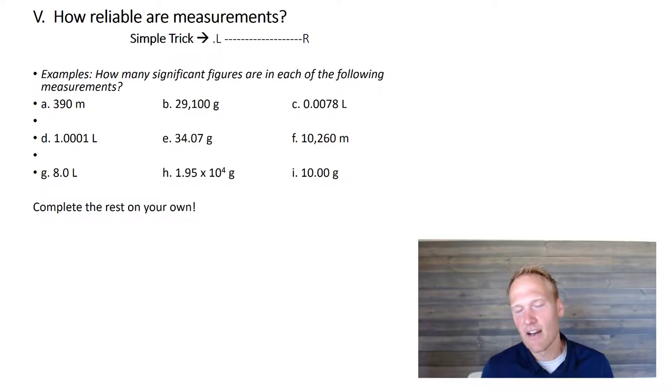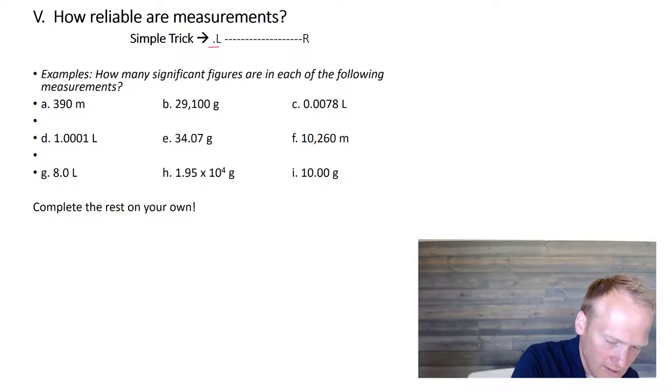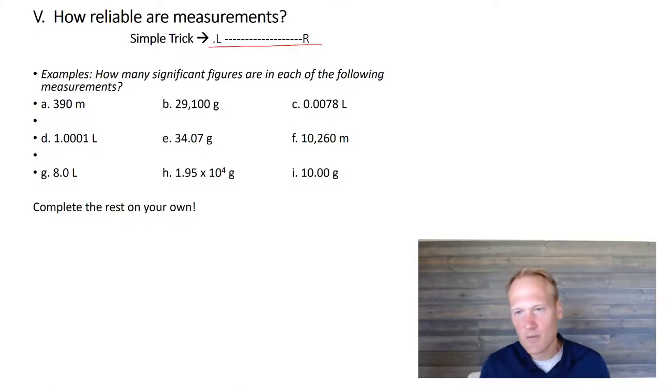I know I just told you a bunch of rules. There's a simple trick that I use that basically says if you have a decimal, start from the left, and if you don't, you start from the right. This is kind of a little graphic, dot L, R, and it kind of helps me remember, okay, if there's a decimal, start from the left. What does that mean? Well, you're going to move toward the number. You're going to stop at the first non-zero number, and you're going to count all the way to the end.